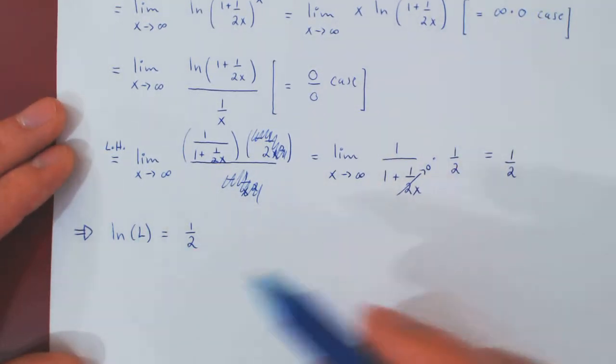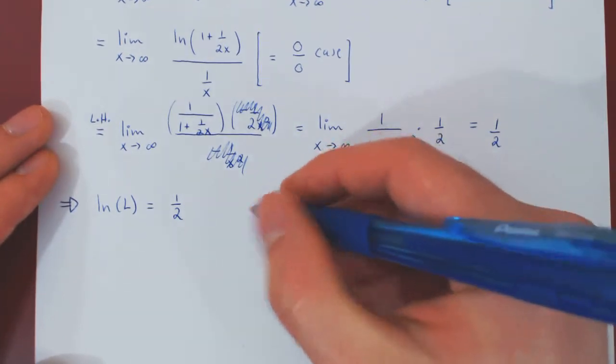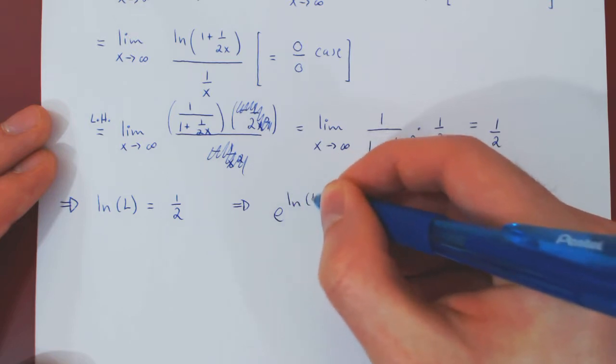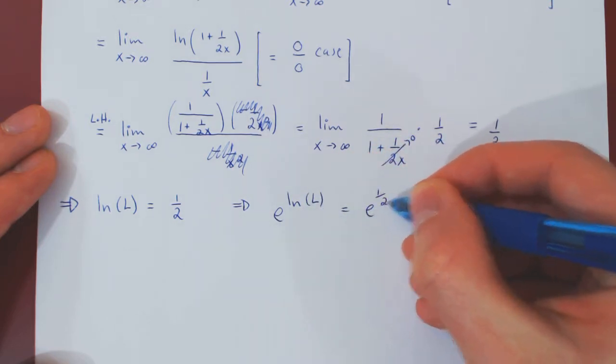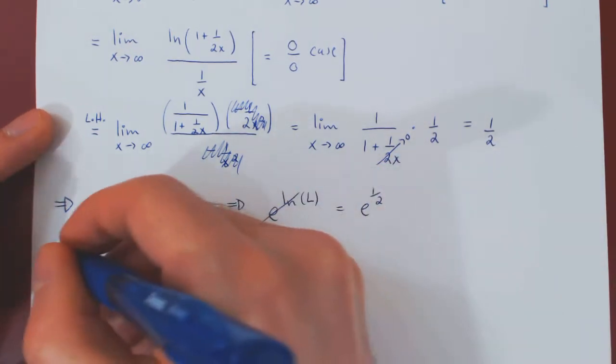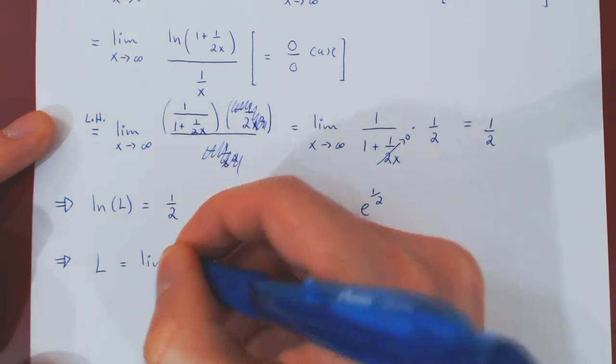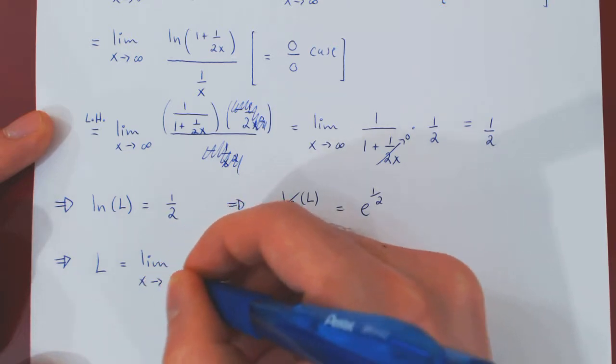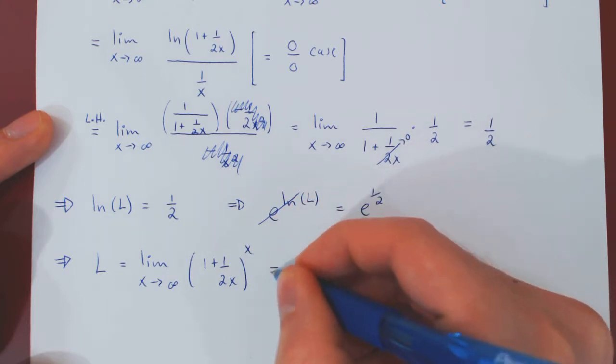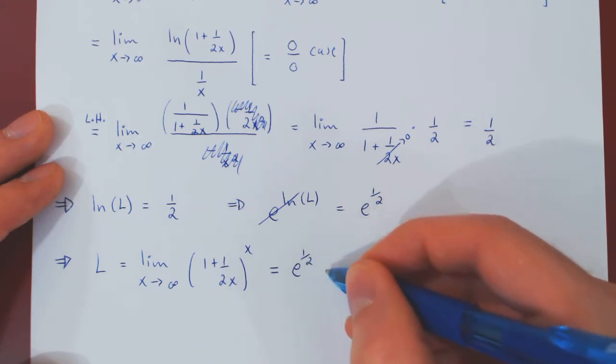Well, to cancel off L, we simply have to raise both sides with the base E. So E to the ln of L is E to the 1 half, but E being the inverse of ln, they cancel out, and so we're left with that the limit, L, which is, if you recall, the limit as x tends to infinity of 1 plus 1 over 2x to the x, is actually exactly equal to E to the 1 half, or if you prefer, the square root of E.